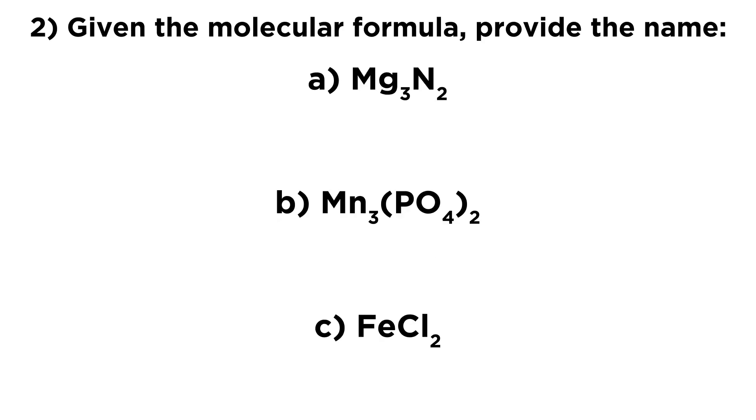Now let's look at these molecular formulas and write the names. So we have Mg3N2. So Mg3, those are three magnesium ions. Those are Mg2 plus ions. And we just refer to the cation by the name of the element. So that is just going to be magnesium.